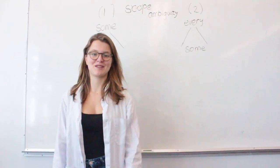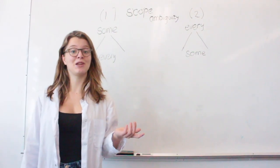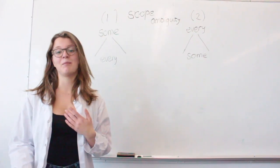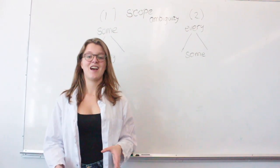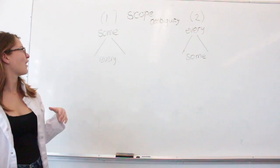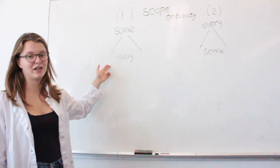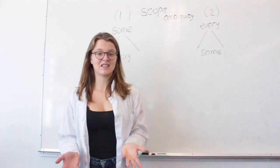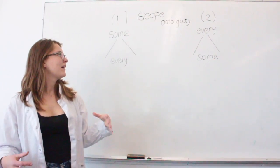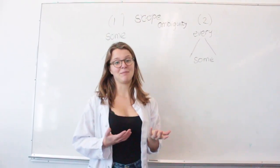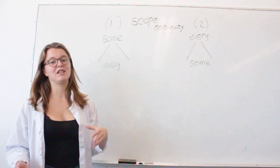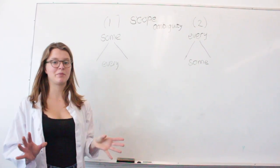The robot is confused by something called scope ambiguity. Scope ambiguity occurs when two quantifiers — words like some, every, few, a lot — can take scope over each other in the meaning of the sentence. In the first interpretation, 'some' takes scope over 'every,' meaning one person needs to drink every cup. In the second interpretation — the one I meant — 'every' takes scope over 'some,' meaning every cup needs to be drunk by someone, but not specifically one person.